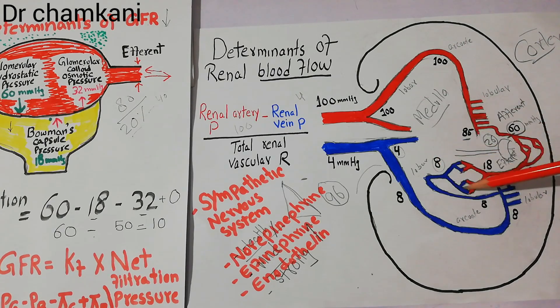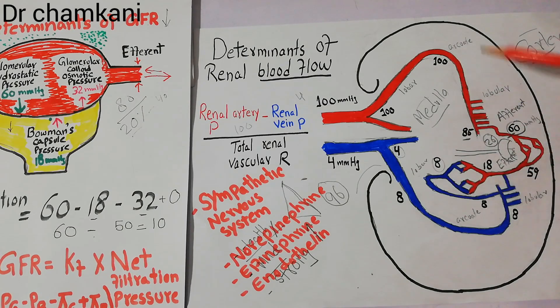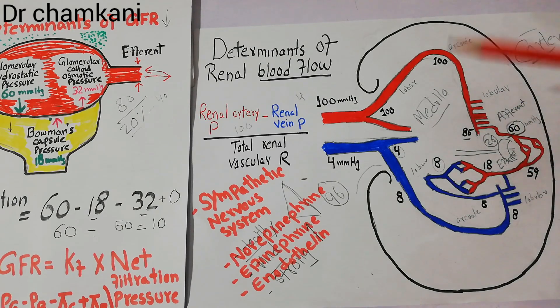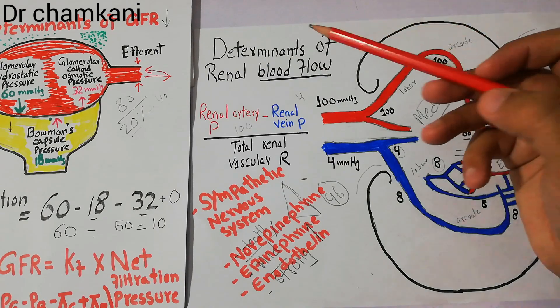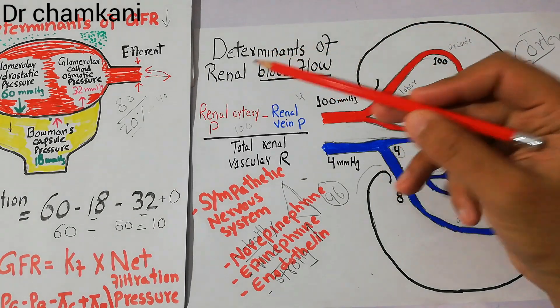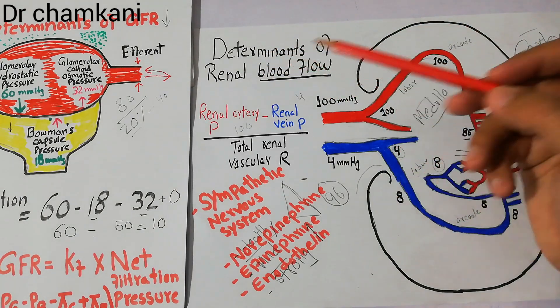This region — from the lobular artery through the peritubular capillaries — is the point of maximum resistance to blood flow, and any increase or decrease in resistance at these levels acts as an important determinant of renal blood flow.